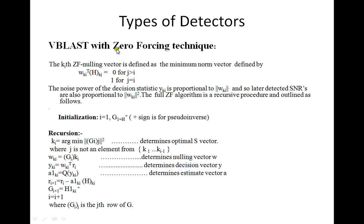The first type of detector is the zero-forcing technique, a very widespread detector. The main characteristic that classifies a detector is its nulling vector W. In zero-forcing, the nulling vector W is defined as the minimum norm vector defined by 0 for j greater than i and 1 for j equal to i. The noise power of the decision statistic is proportional to this nulling vector, and the SNR becomes proportional to the variance of the nulling vector.